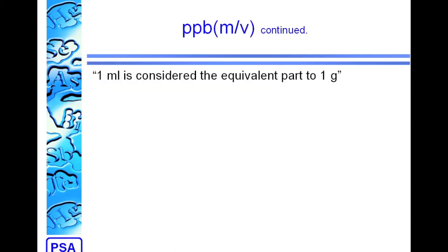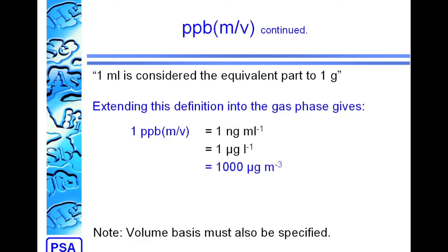If we move into the gas phase and bring with us that concept of 1 milliliter is considered the equivalent part to 1 gram, then we can take our 1 PPB mass-volume, express it as 1 nanogram per milliliter, convert it into the units we want for our equivalents, and end up with 1 PPB mass-volume is 1,000 micrograms per cubic meter.